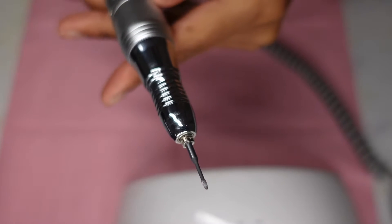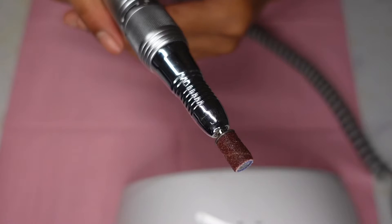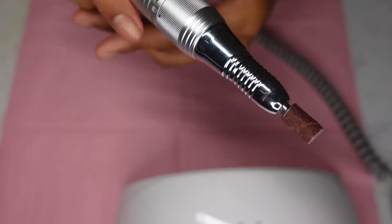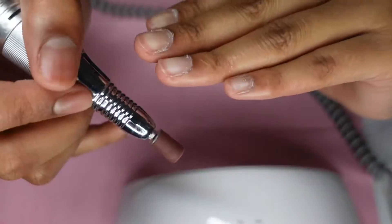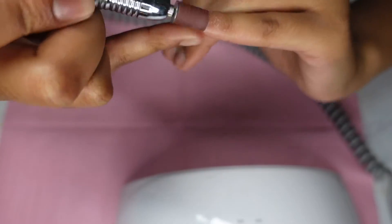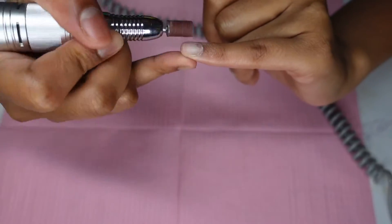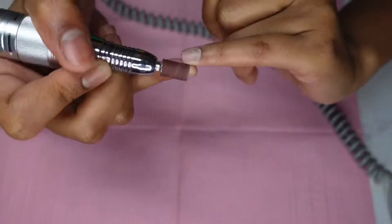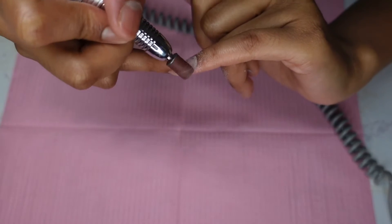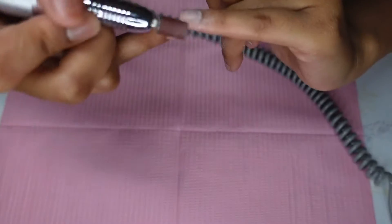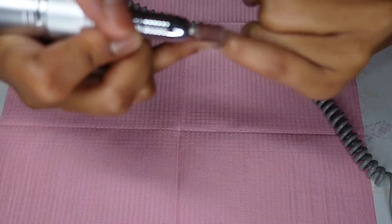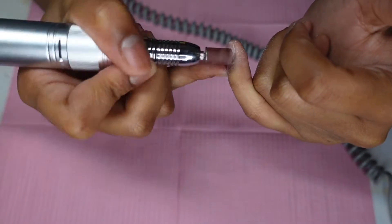This is my cuticle bit I'll leave in the description box, and this is my sanding band that I will also leave in the description box. Now I'm going in with my sanding band to remove all of the oil and shine from the natural nail, just to protect my nails from lifting and to also help my nail tip adhere to my natural nail beds.